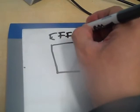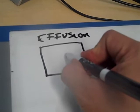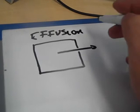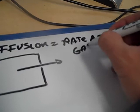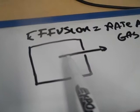So effusion — you can see there's a collection of gases, and when the gas escapes like an orifice, that's effusion. That's the rate at which the gas escapes through a hole like that.